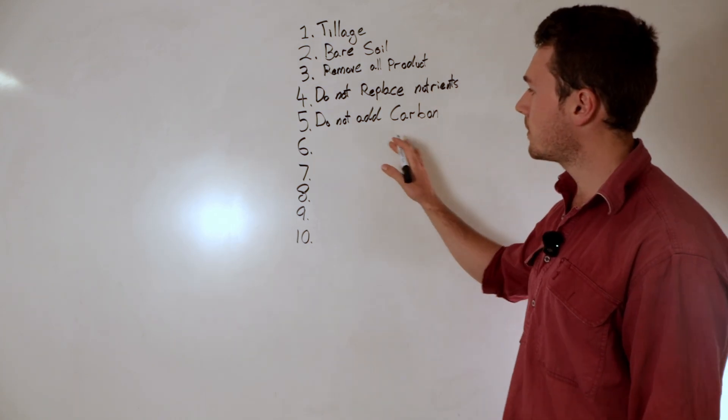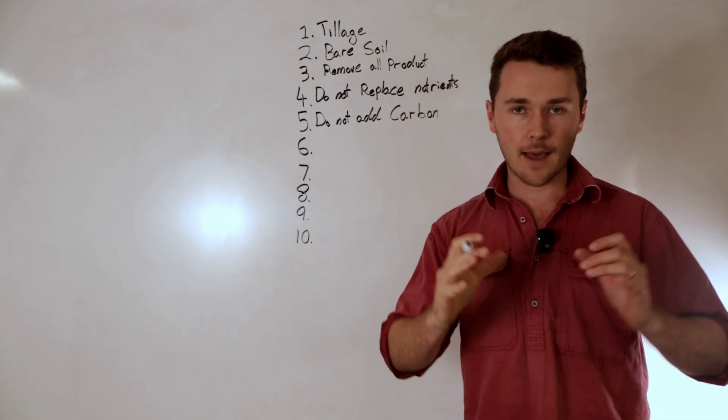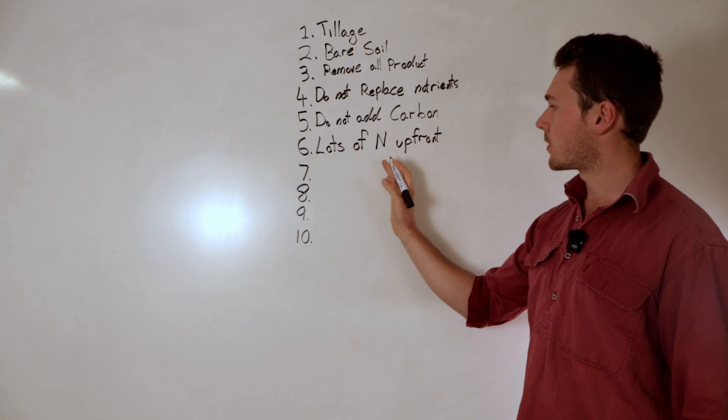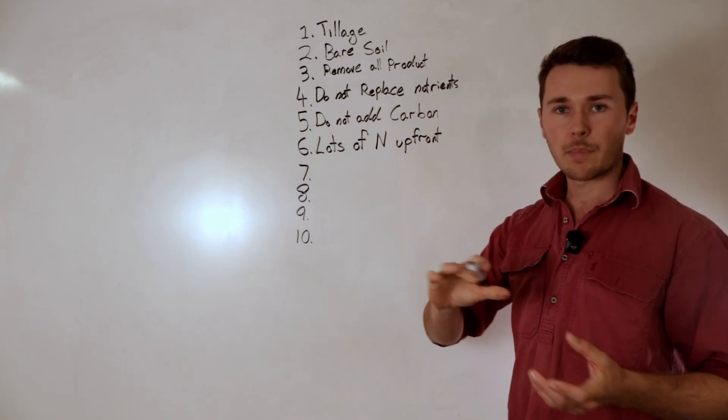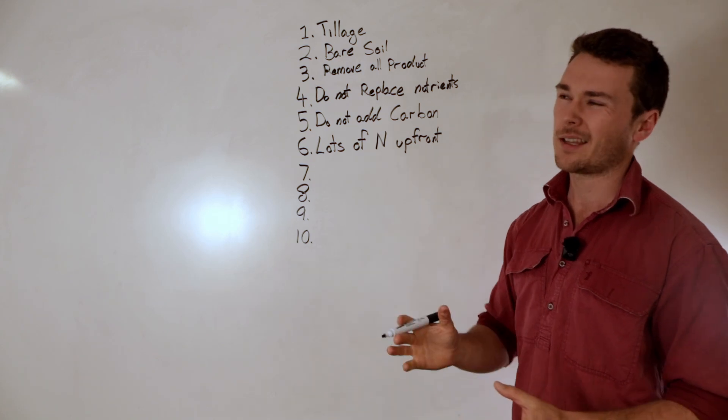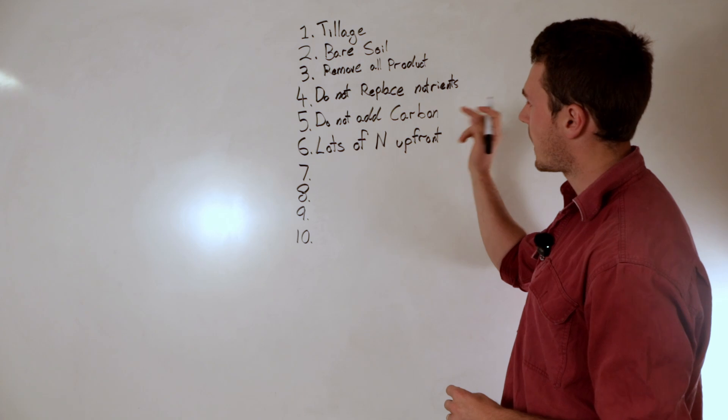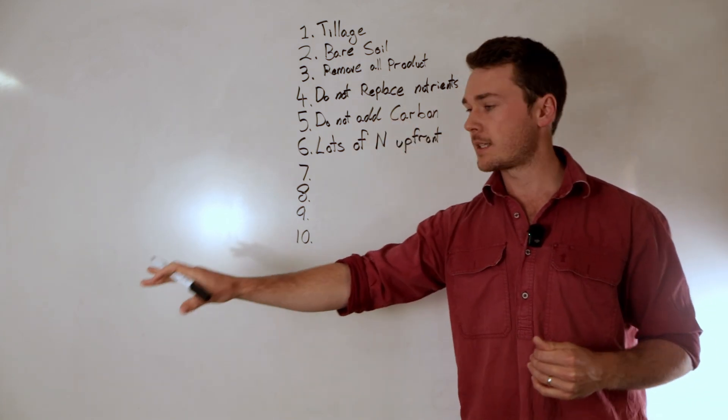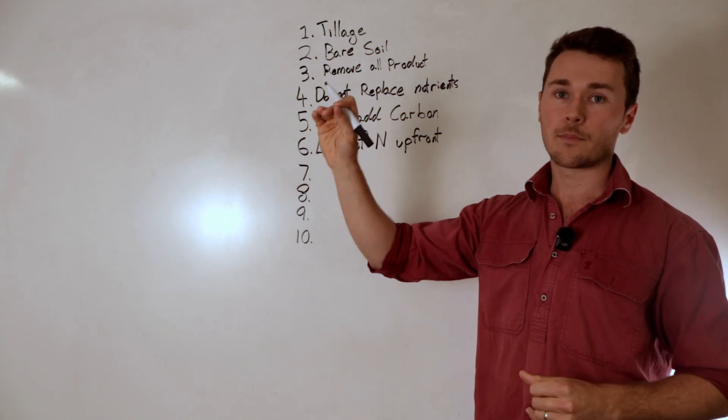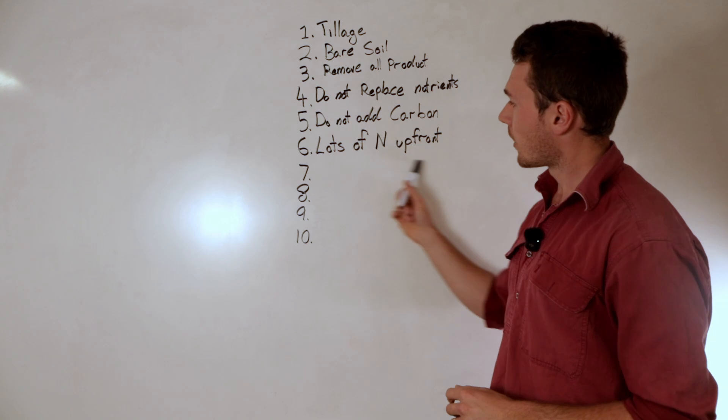The next one is we want to make sure that we're applying as much nitrogen fertilizer up front as possible. So this is a great way to destroy soil in two ways. The first one is that the soil needs to balance carbon-nitrogen ratio depending on your measurements you use. It's going to be around say 11 parts of carbon to one part nitrogen. If we apply a bunch of nitrogen it means that a lot of that carbon is going to get burnt up and utilized to then maintain that balance.